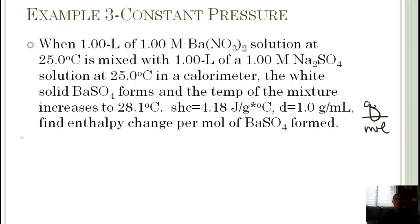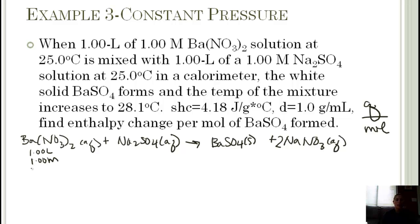Let's write our equation first. We've got barium nitrate plus sodium sulfate forming solid barium sulfate and sodium nitrate. I need a 2 in front of my sodium. Now I know I have one liter, one molar at 25 Celsius, same thing for the sodium sulfate. For the barium sulfate, the temperature went up to 28.1 degrees C. I have my heat capacity at 4.18 joules per gram degree Celsius, and the density of my overall solution is one gram per milliliter. I'm looking for heat per mole.